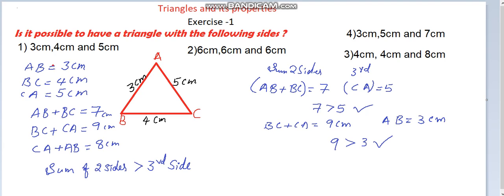Last condition: CA plus AB equals eight centimeters, and the third side BC equals four centimeters. Eight is greater than four — satisfied. So all three conditions are satisfied, and with the given measurements of 3 cm, 4 cm, and 5 cm, we can form a triangle. That is the solution for the first problem.